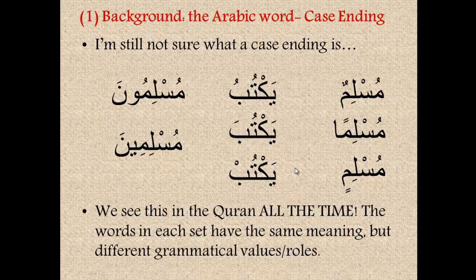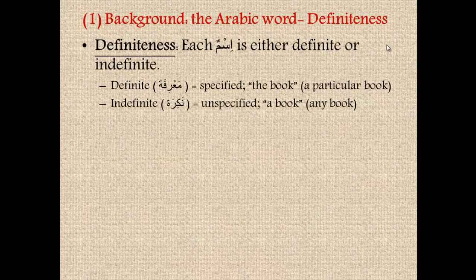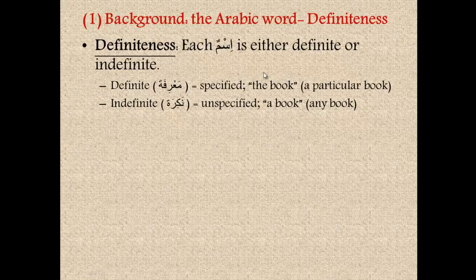Let's talk about the fourth and last quality of asma' in Arabic. Each ism is either definite or indefinite. The Arabic word for definite is ma'rifah. When I say something is definite, I mean it is specified — we're talking about a specific item or specific thing. So if I say 'the book,' just like in English when I say 'the book,' you and I know we're talking about a particular book. If I say 'the book is on the table,' out of all the books in the world, there is just one book that I am referring to.